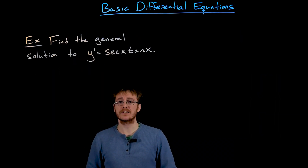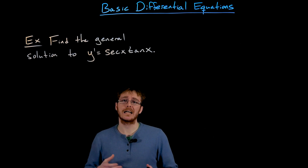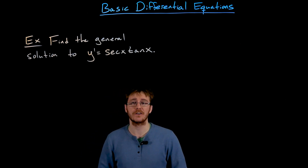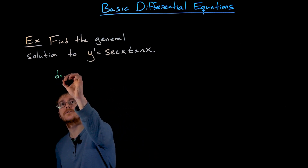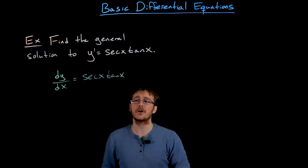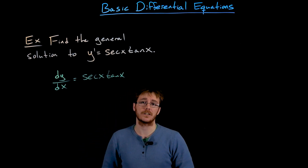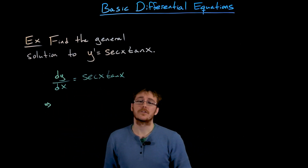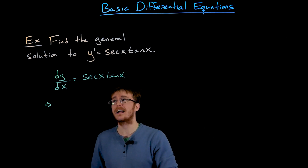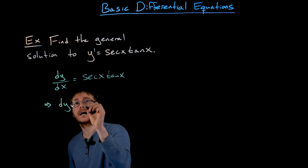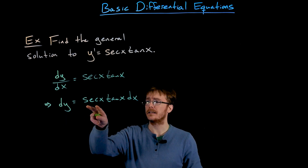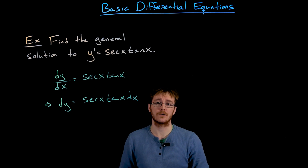This will be another example of a basic differential equation that we can solve just by integrating both sides — finding the antiderivative of each side. This is a special case of a more general method called separation of variables. If we use Leibniz notation instead of prime notation, we can express our differential equation as dy over dx equals secant of x times tangent of x. We treat dy over dx as a fraction, multiply both sides by dx, and rewrite the equation as dy equals secant of x times tangent of x times dx.